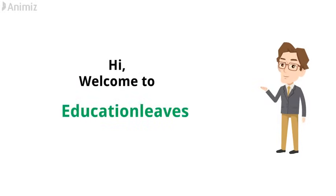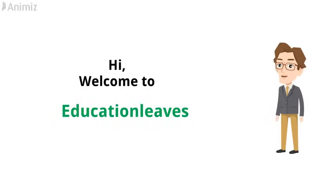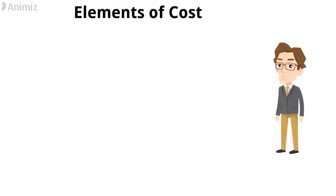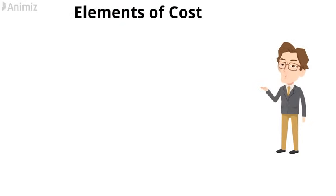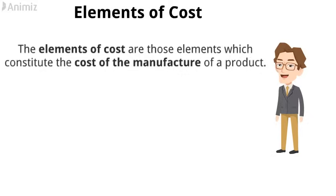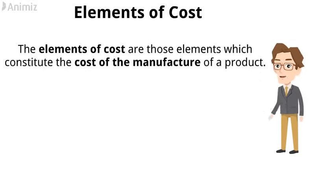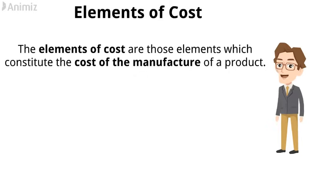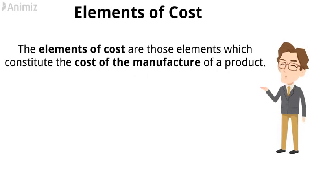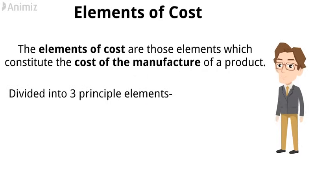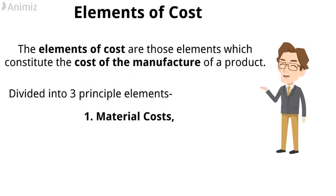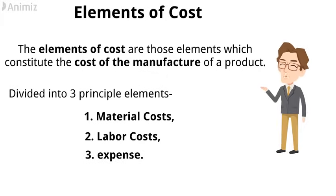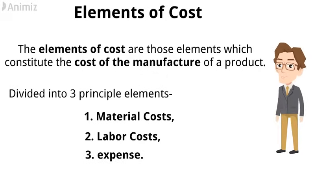Hi, welcome to Education Leaves. In this video, I am going to discuss the elements of cost. The elements of cost are those elements that constitute the cost of the manufacture of a product. The cost of an industrial enterprise may be divided into three principal elements: material cost, labor cost, and expense. Let's understand each of these elements in detail.